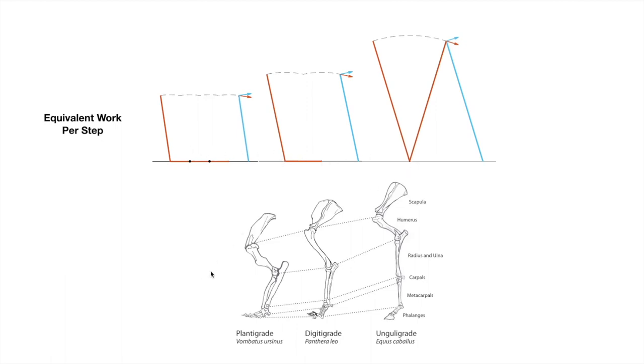This looks a bit like the plantigrade, digitigrade, and unguligrade conditions we saw before, but all of these conditions have equal cost. This challenges the classical perspective that plantigrade means less efficient. In fact, each of these configurations could be just as economical but with different strategies.